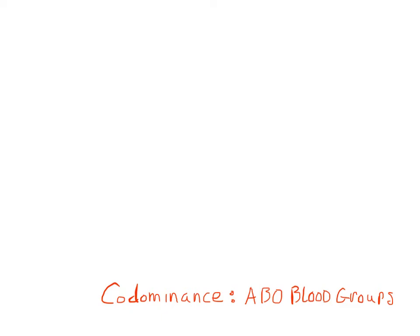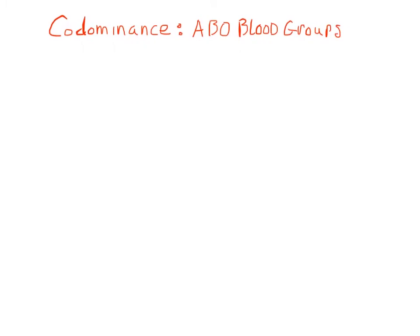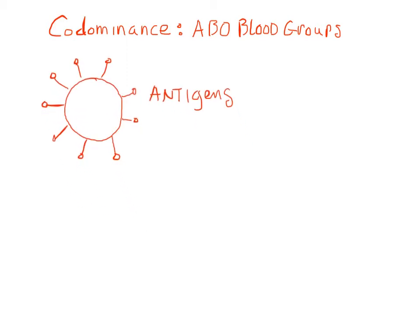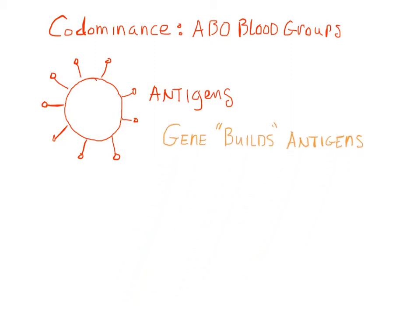This video explains co-dominance, and for our example we will use the ABO blood groups. Let's draw a red blood cell. On the surface of the red blood cell are little proteins that stick out. These proteins basically serve to identify the cell and are called antigens. Humans have a gene that controls the production of these antigens — in other words, the gene contains the instructions to build them.